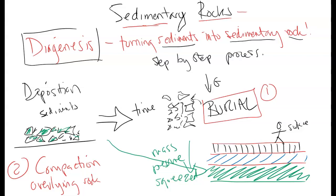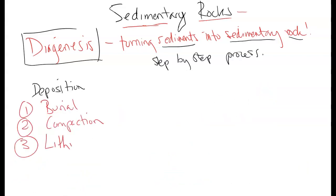Compaction is the next thing. So the next thing we have is lithification. Now lithic means rock, cation means to make. So to make rock. So what happens is you have this layer of green rock, and it's been buried and compacted.